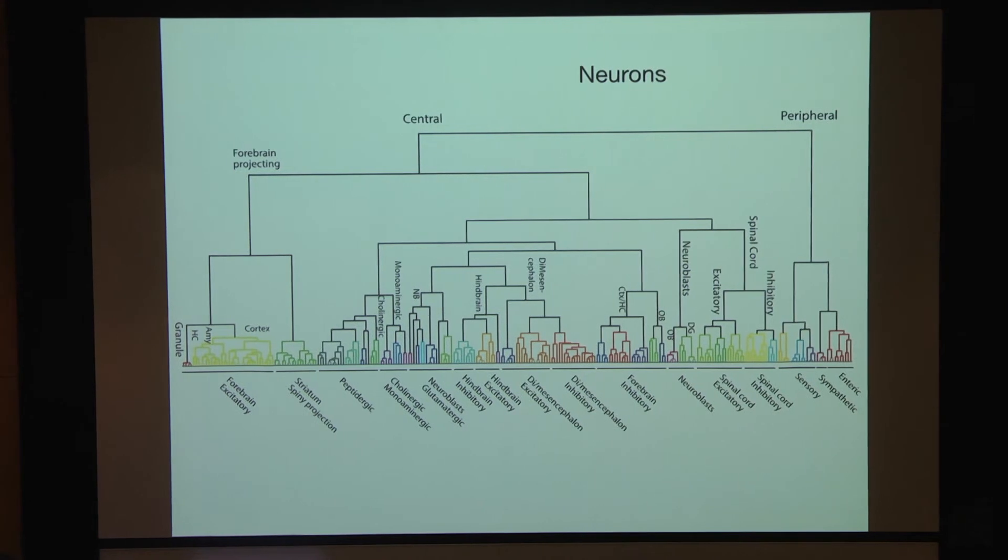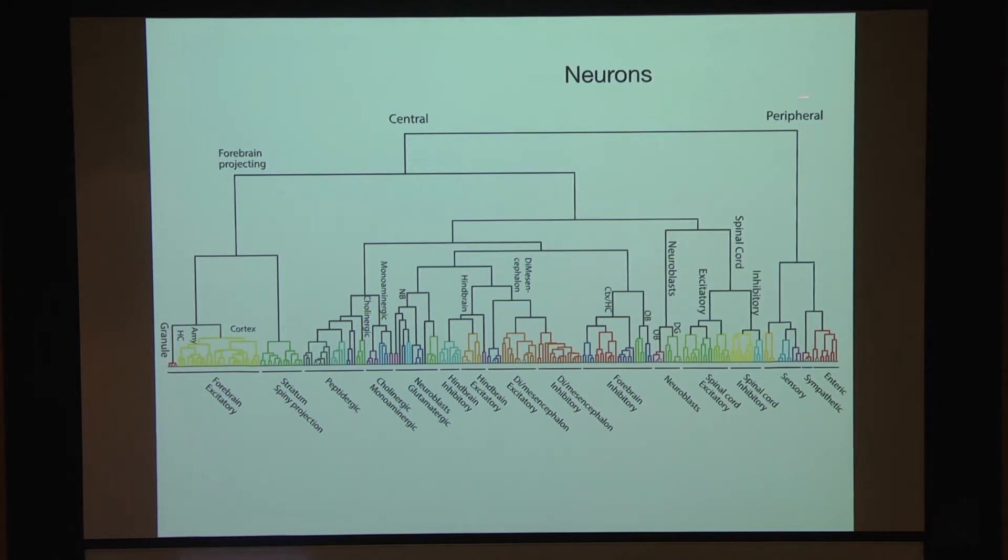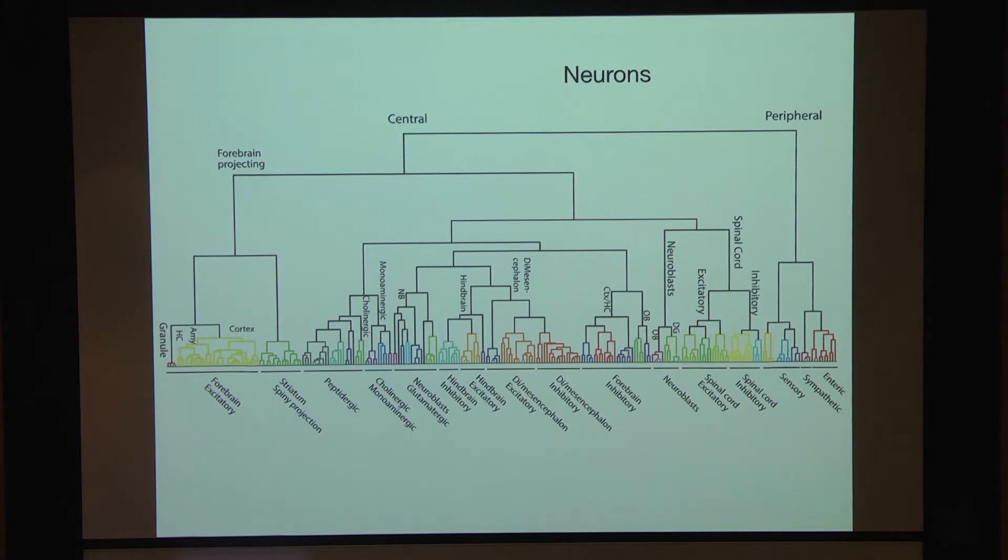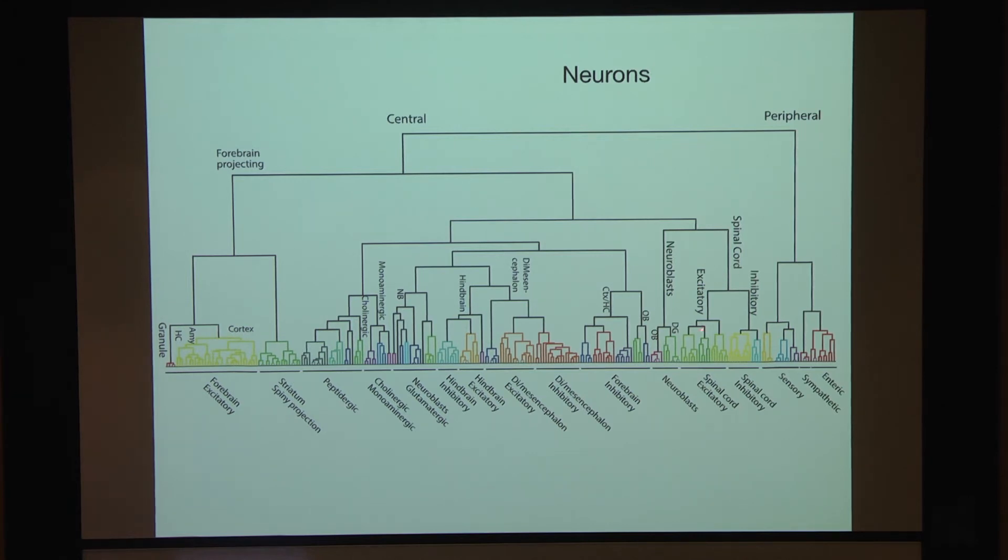And what you see, again, that I mentioned in the beginning, that the architecture of the brain reflects very much development. So the major split is between the central nervous system and the peripheral nervous system. And in the peripheral nervous system, we get a very neat split between the three different classes, the sensory, the sympathetic, and the enteric, as you might expect. In the brain itself, we see large blocks of cell types that have a common developmental origin. So for example, you have the spinal cord here, you have the diencephalon-mesencephalon here, you have the hindbrain here. So this branching really reflects the anterior-posterior patterning that I showed in one of those slides. In each case, it seems that the brain likes to split into neurotransmitter types, so excitatory and inhibitory. You see in the spinal cord, there's a neat split between excitatory and inhibitory neurons. And the same is true in the hindbrain and the diencephalon-mesencephalon.